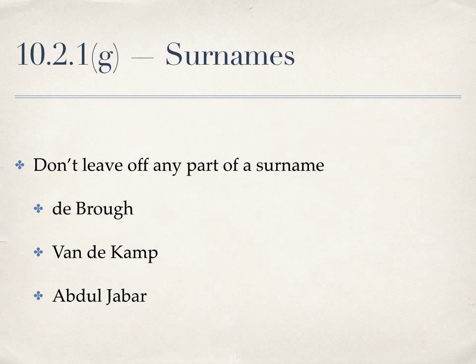Don't leave off any part of a surname that is made up of more than one word. Names like Debra Vandykamp or Abdul-Jabbar actually contain multiple pieces of the surname, and you'll retain all pieces of the surname.